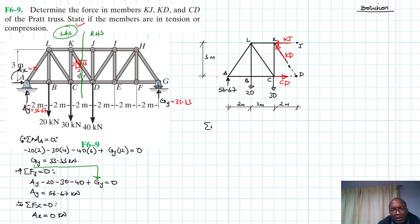So we have summation of moments about point D, equal to zero, clockwise being our reference. We have negative moments 56.67 by 6, and then we have plus 20 by 4, plus 30 by 2, and then we have plus KJ by 3 equal to zero.